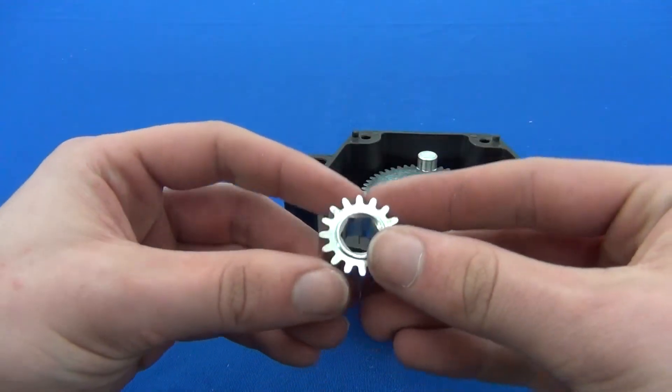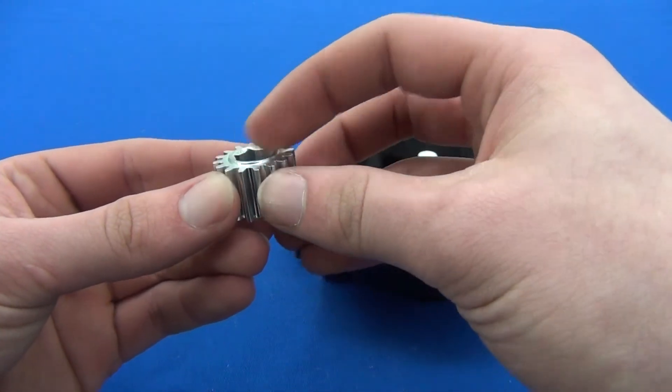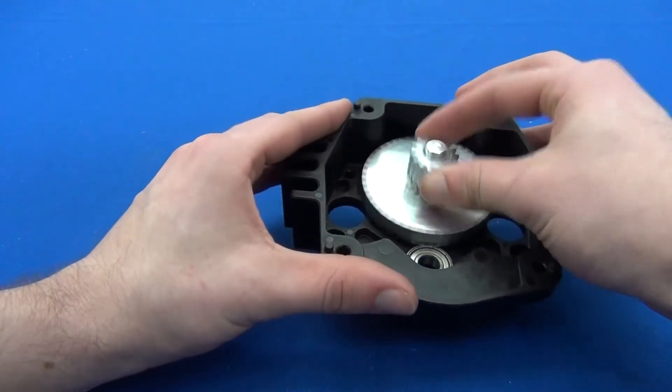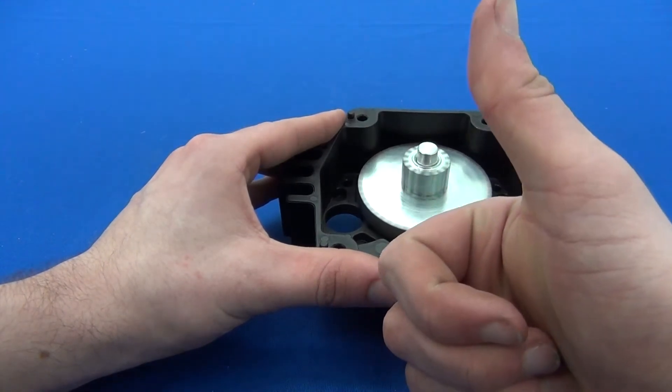Next up is the small cluster gear. Place this on the cluster shaft on top of the large cluster gear. However, with this gear, make sure that the boss is facing up.